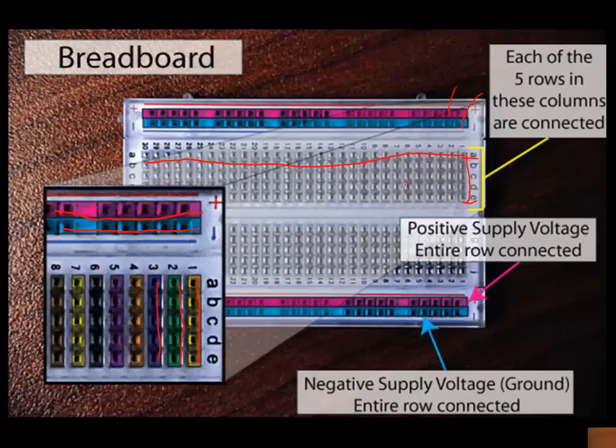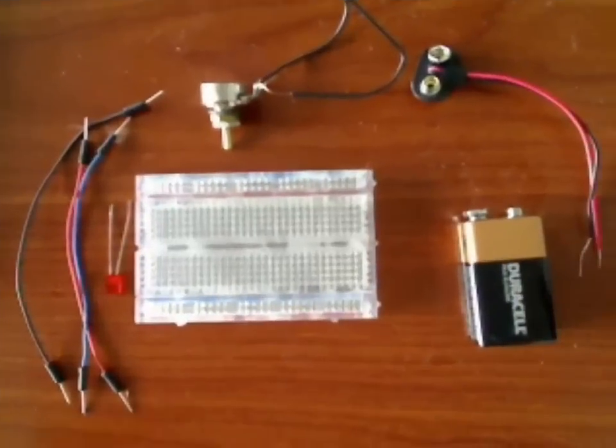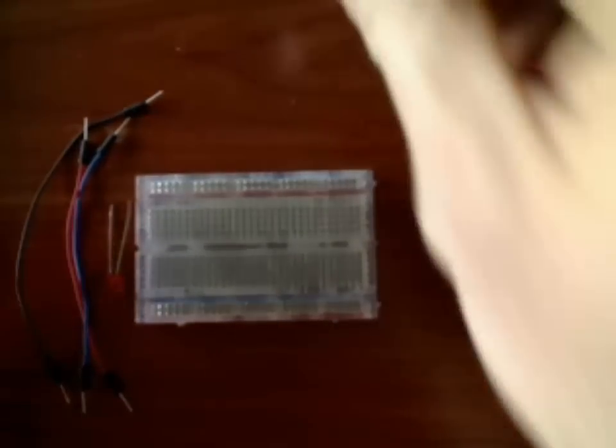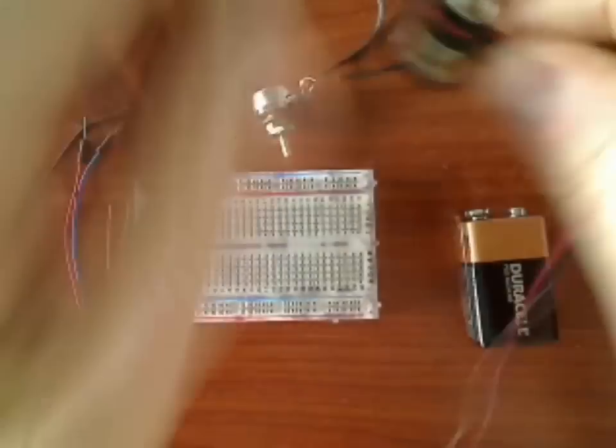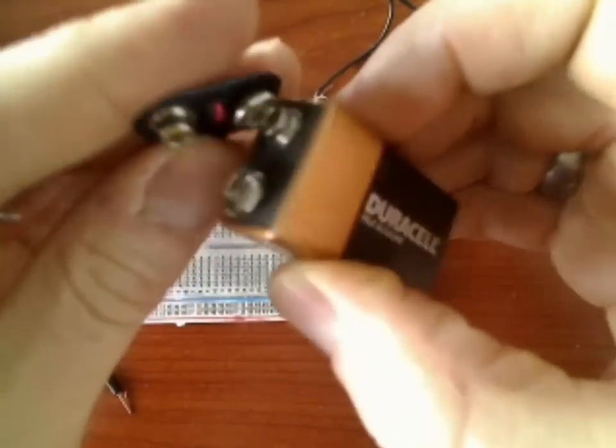So from there, let me just assemble a quick circuit on the breadboard over here. I'm just going to make a little LED light. First thing I'm going to hook up is a 9-volt power supply. It's a 9-volt battery.